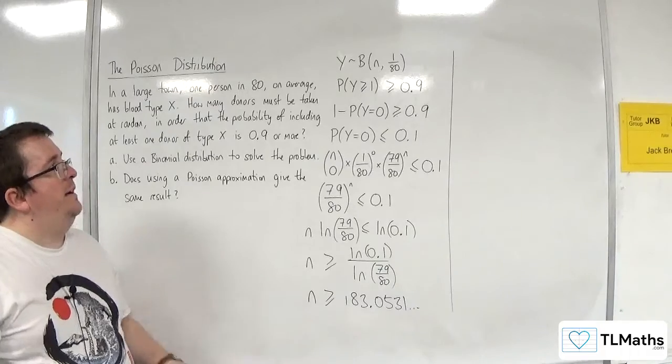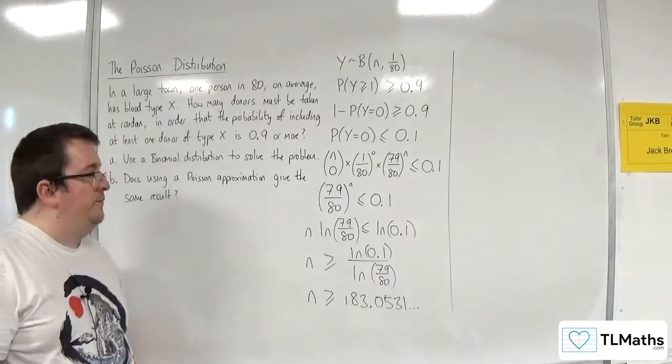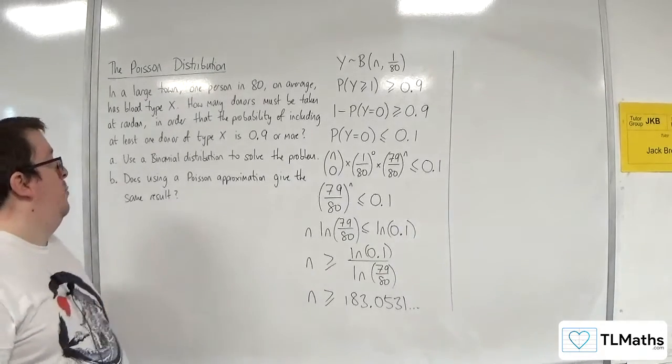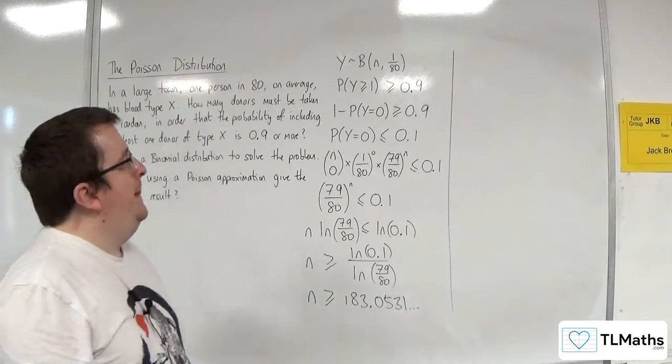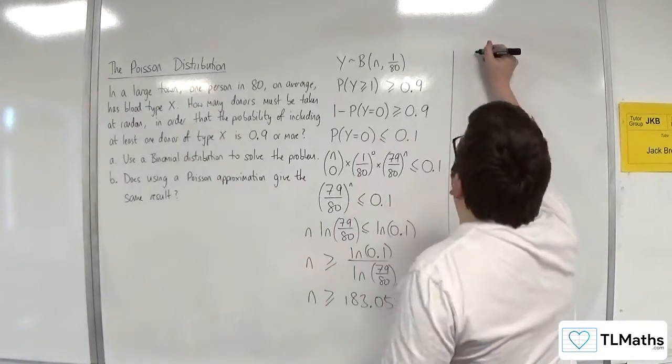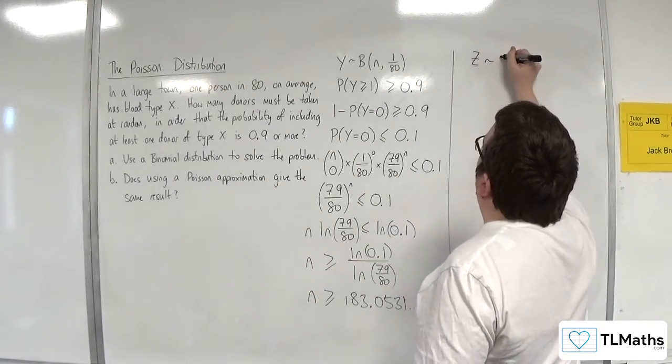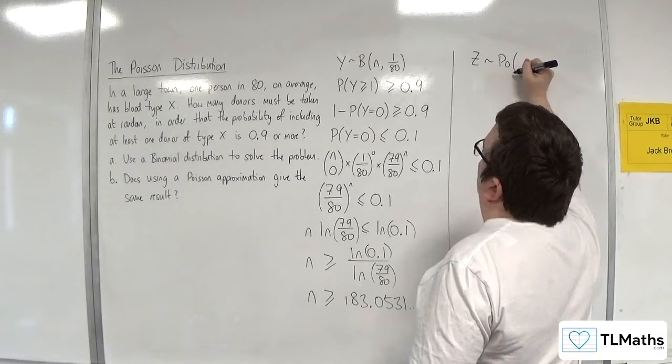Okay, so that is doing it via the binomial distribution. So part B, does using a Poisson approximation give the same result? Okay, so let's call the Poisson distribution Z.